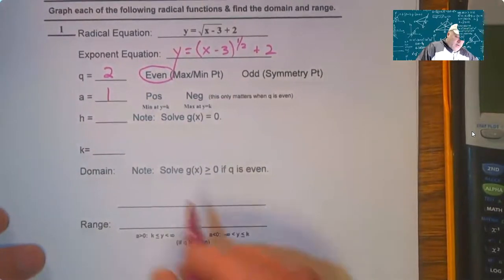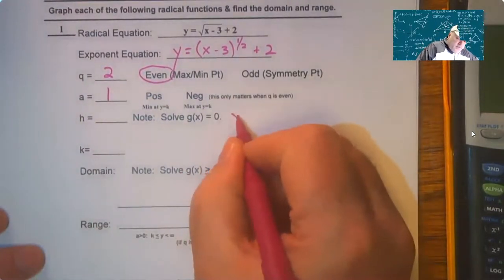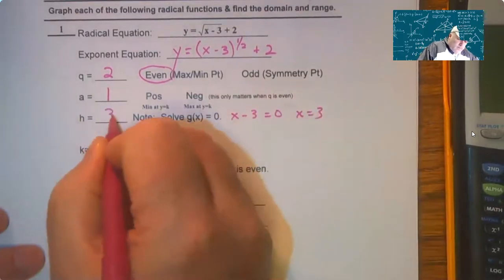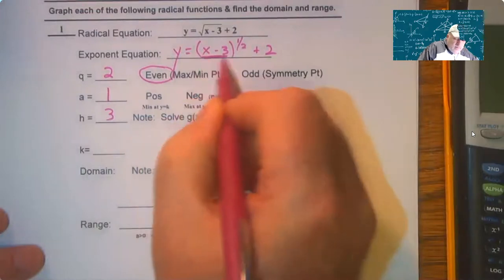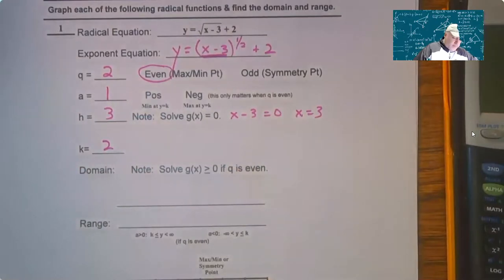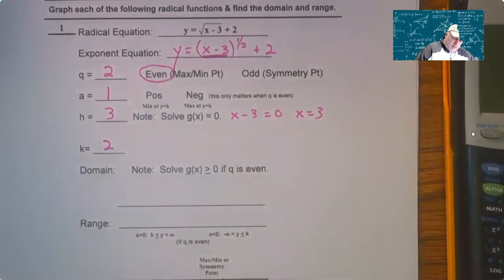And then the H, to get H we solve the g(x). So the function that's inside, whatever is in here, we solve that equal to zero. And then the K is just simply what's added on the end. So the 3, 2, when I come down here, that's going to be a minimum starting point.